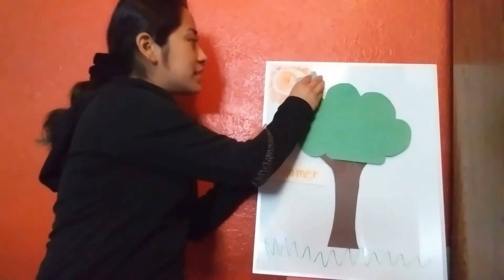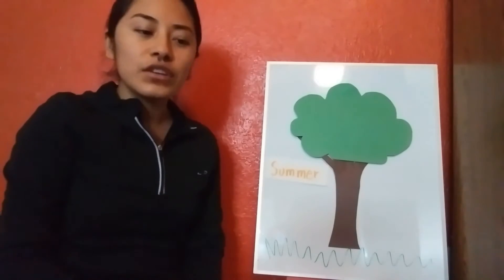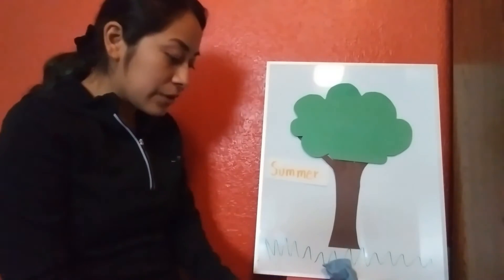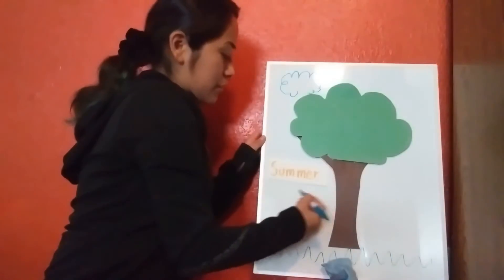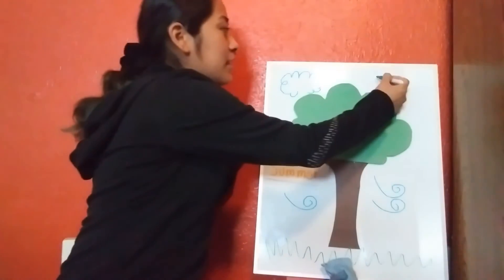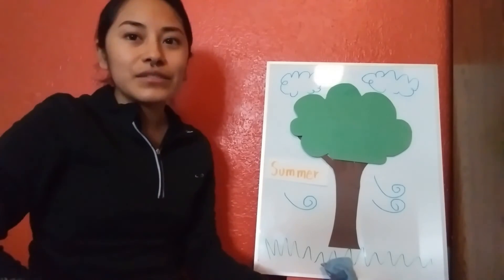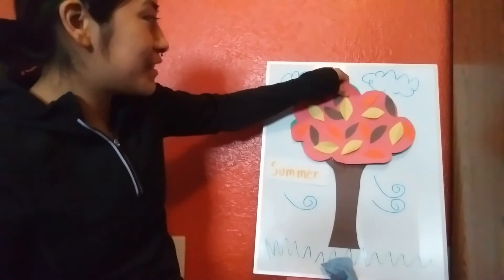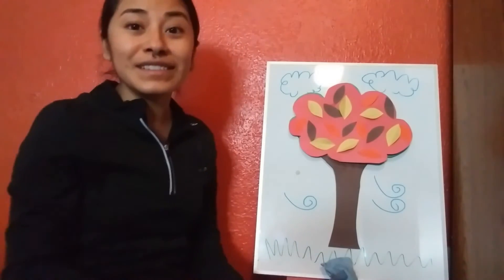But soon the weather starts to change again. The sun starts to hide behind the clouds, and not only does it hide behind the clouds, but the days get a little bit colder and the weather gets windy. So the wind starts blowing, the sun starts hiding, and the days get shorter. What weather do you think it is when the leaves turn into different colors and the weather becomes windy and cold?